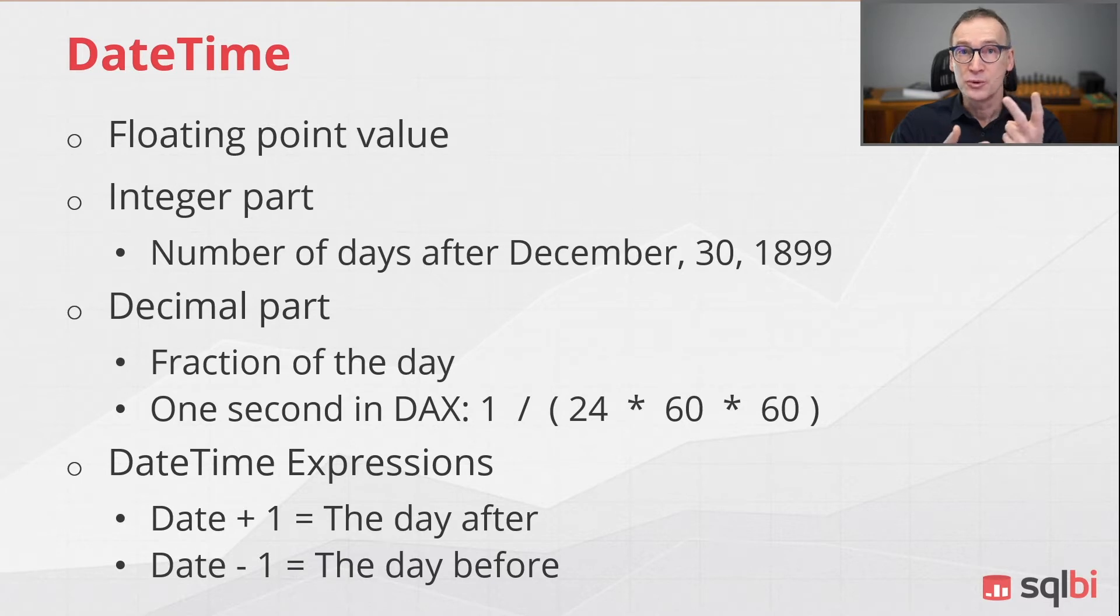Therefore, 2 in DAX represents two days after December 30th, that is the 1st of January, 1900.